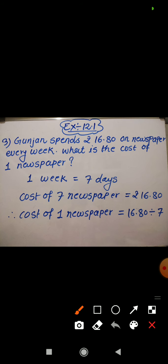In this question it is given that Gunjan spent 16 rupees 80 paise on newspaper every week. Now one week means seven days, right? Hence the cost of seven newspapers will be 16.80 and we are asked to find out the cost of one newspaper.